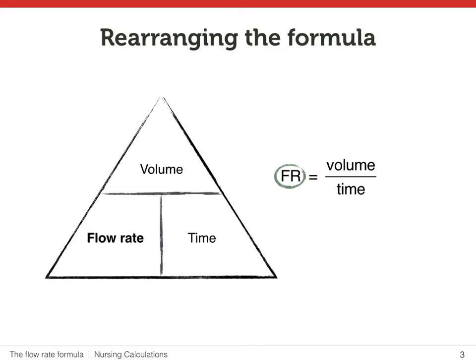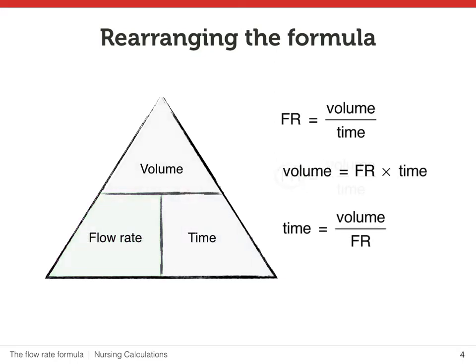The formula can be rearranged so that you can calculate either the volume or the time, if these are the missing quantities. The triangle on the left hand side of the screen may help you derive any other helpful formulae. We can see how flow rate can be achieved using volume over time. If we want to calculate volume and we are given the flow rate and the time, we would multiply these together. And if we need to find the time, given the volume and flow rate, then time equals volume divided by flow rate.